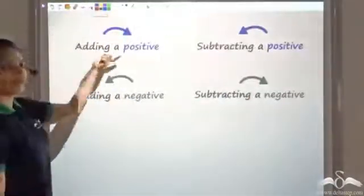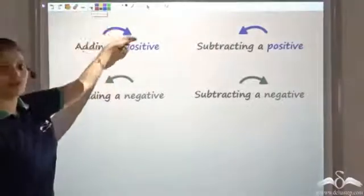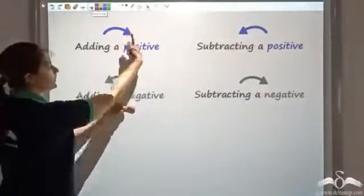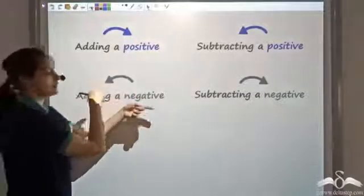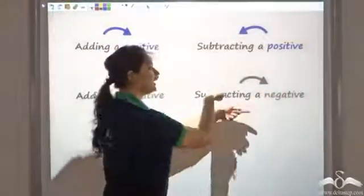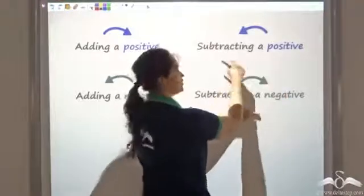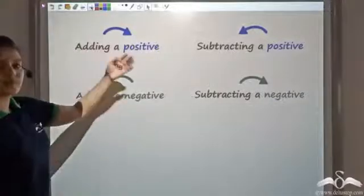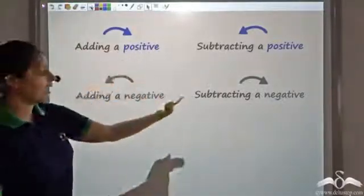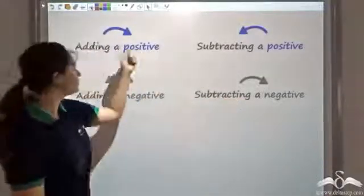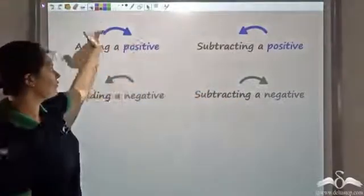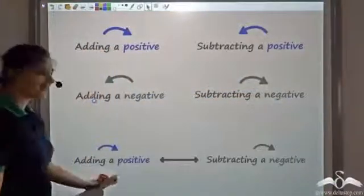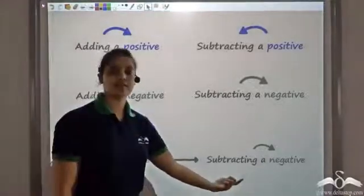To summarize: adding a positive number means going forward; subtracting a positive number means going backward; adding a negative number means changing direction — move back; subtracting a negative number means again changing direction — move forward. If you observe, adding a positive and subtracting a negative both move in the same forward direction. So adding a positive is the same as subtracting a negative.